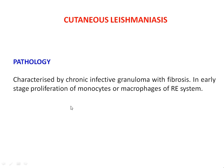As far as the pathology is concerned, it is characterized by chronic infective granuloma with fibrosis. In early stages, proliferation of monocytes and macrophages occurs in the reticuloendothelial system. It is an infective granuloma, followed by fibrosis, where the skin is being infected, causing lesions — that is, patches and swelling of the skin. In early stages of proliferation, the monocytes and macrophages present in the skin are being affected as part of the reticuloendothelial system.